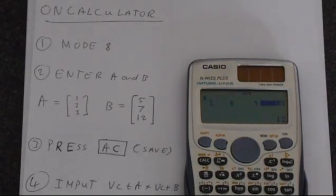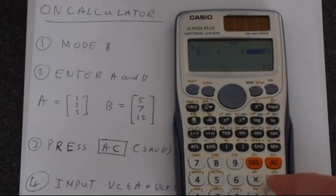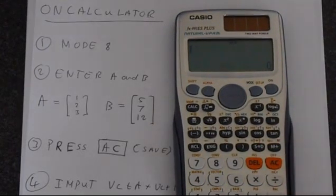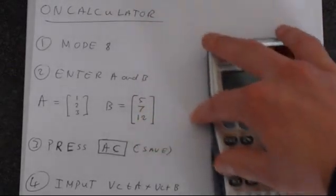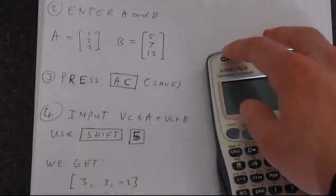So now we've entered this. We need to save this to the calculator's memory. The button for saving on this calculator is the AC button, which is here. So press that. That's now in the calculator's memory.